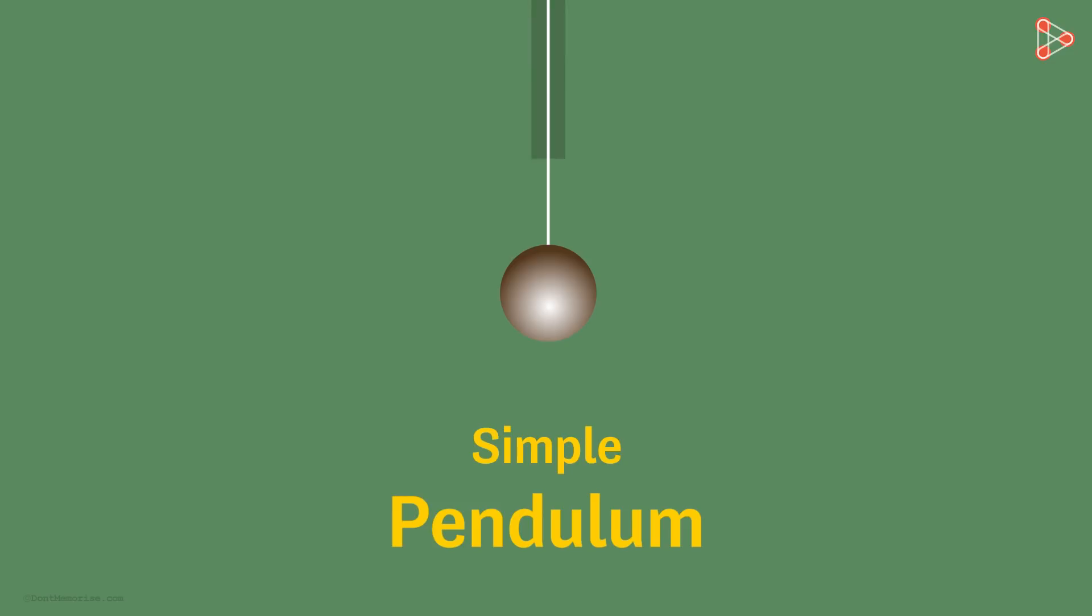However, if we take a sufficiently thin string like a thread and a very small object heavier than our string, such as a small stone or a metallic ball, we are close to having a simple pendulum. We will assume our setup to be a simple pendulum anyways.